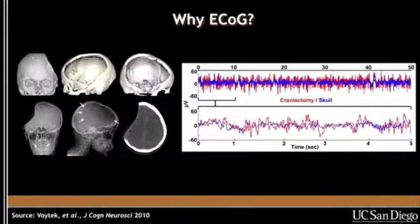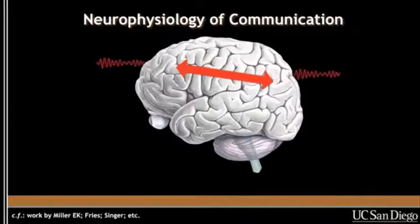ECOG is a very valuable and important tool in human cognitive neuroscience because it's so rare partially and because the signal quality is much better. In this web clip I'll try to explain how the phase of low frequency oscillations such as alpha or theta play an important role in dynamically coordinating brain networks and biases the probability that a group of neurons will fire action potentials.